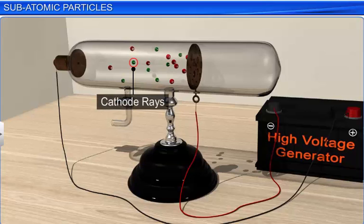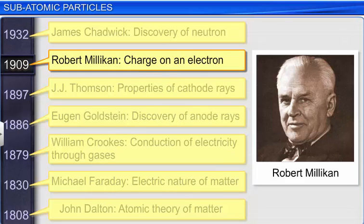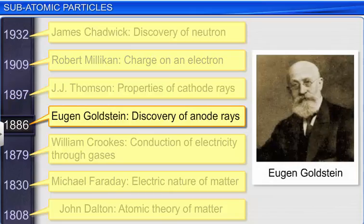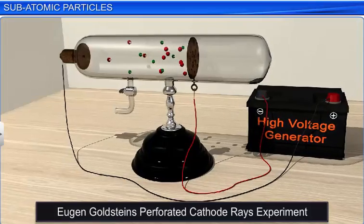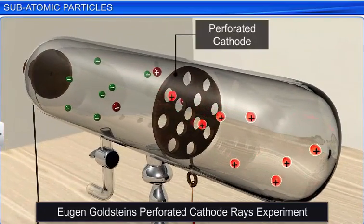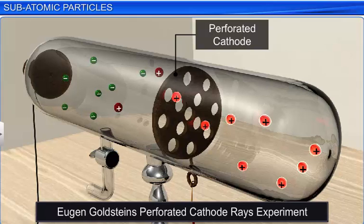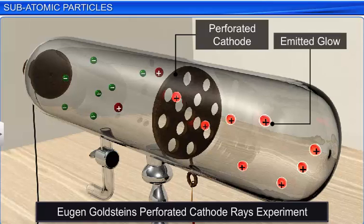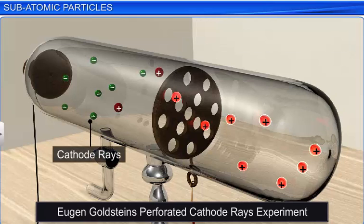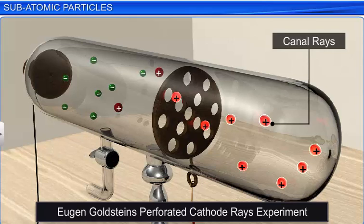Just as the discovery of cathode rays led to the discovery of negatively charged particles called electrons, the discovery of anode rays led to the discovery of positively charged particles called protons. Anode rays, also called canal rays, were discovered by E. Goldstein in 1886. When he repeated the cathode ray experiment with a perforated cathode instead of a perforated anode, he observed that discharge tubes containing a perforated cathode also emit a glow at the cathode end. He concluded that in addition to cathode rays, there is another ray traveling in the opposite direction. Since these rays passed through the holes or channels in the cathode, he called them canal rays.